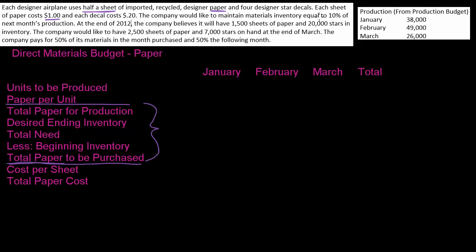The company would like to maintain materials inventory equal to 10% of next month's production — that sounds a lot like the production budget. At the end of 2012, the company believes it will have 1,500 sheets of paper, so that's what it has at the end of 2012. The company would like to have 2,500 sheets of paper on hand at the end of March — that's our ending inventory. Then it talks about how they're going to pay for the materials, which we'll cover in another video. So we have the information we need.